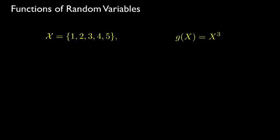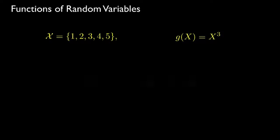As an example, suppose that the random variable has a range equal to the set of integers 1, 2, 3, 4, and 5, and the function of the random variable is its value raised to the power of 3. This table shows the values of the function for every value the random variable could take. When the random variable takes the value 1, the function is 1. When it takes the value 2, the function is 2 raised to the third power, which is 8. When it is 3, it goes to 27; 4 goes to 64; and 5 goes to 125.